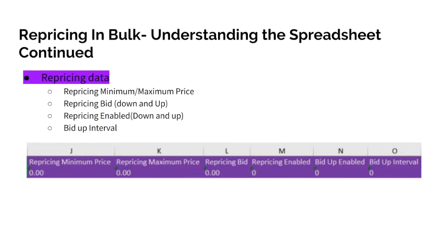The repricing data here shows exactly what you saw in the panel example on the other slide. The enabling columns here in M and N will recognize a 0 for no and a 1 for yes, but the other columns work exactly the same way as the fields shown in the auto repricing tab of the product details page. To set these parameters, enter the values you want for the range, bid intervals, and amounts, and enter 1 to enable repricing and bid up, save the spreadsheet, and upload it back into the panel using the yellow import repricing data button.